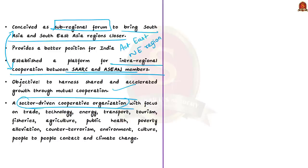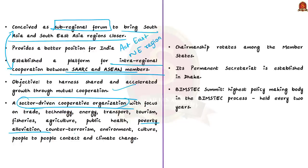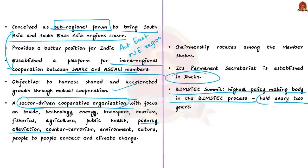The sectors of focus include trade, technology, energy, transport, tourism, fisheries, agriculture, public health, poverty alleviation, counter-terrorism, environment, culture, people-to-people contact, and climate change. The chairmanship of BIMSTEC rotates among member states; the present chair is Sri Lanka, and the chair for 2021–2022 will be Thailand. India was chair in 2000 and then from 2006 to 2008. The permanent secretariat is established in Dhaka, Bangladesh. The BIMSTEC Summit is the highest policy-making body, held every two years.